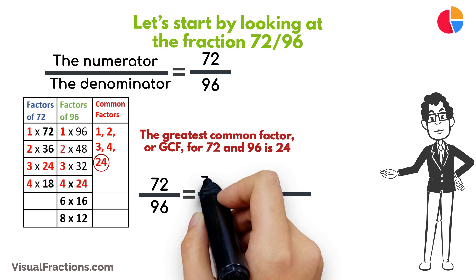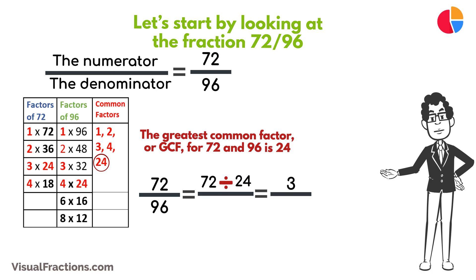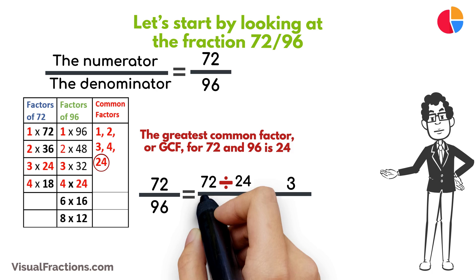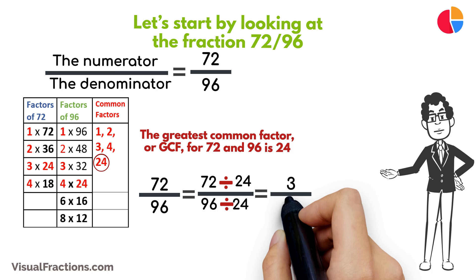We start by dividing 72 by 24, which gives us 3. Then we divide 96 by 24, which results in 4.